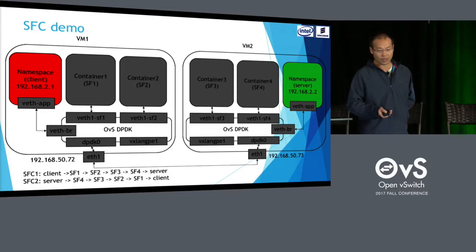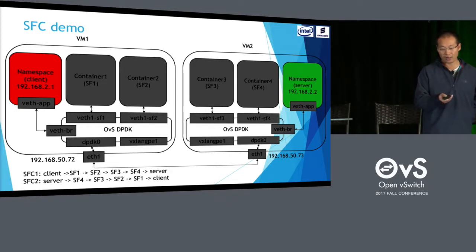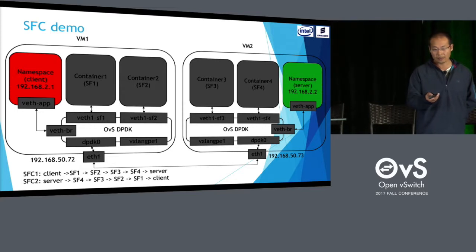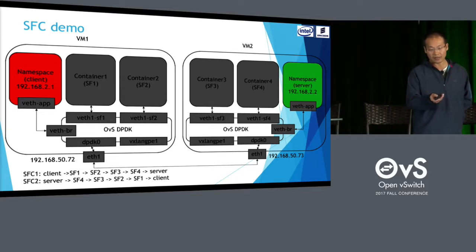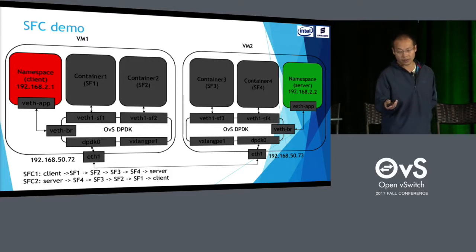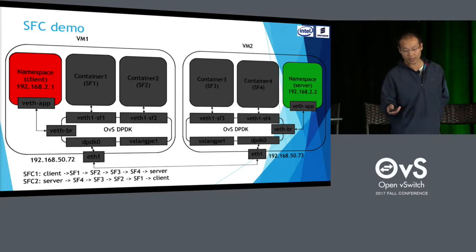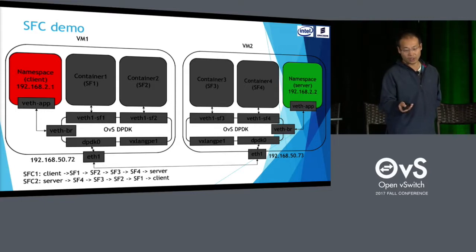Here is our SFC demo topology. We have two VMs, with two service functions in each VM. We have a client in VM 1 and a server in VM 2, each in a network namespace. When we ping the server from the client, the traffic goes through service function forwarder, SF1, SF2, SF3, SF4. The reverse traffic goes through the reverse service function forwarder, from service function 4 back through service function 3, 2, and 1.